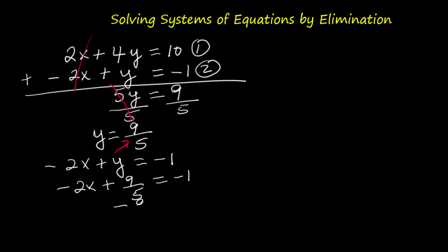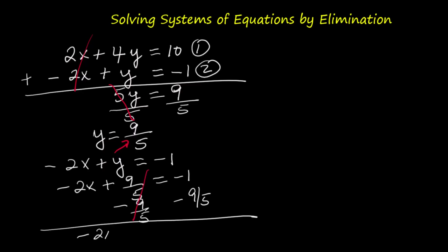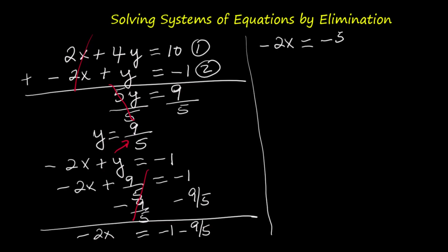Subtract 9 over 5 from both sides: negative 2x equals negative 1 minus 9 over 5. To subtract, we need a common denominator — 5 is the common denominator. Multiply negative 1 by 5 to get negative 5 over 5, so negative 2x equals negative 5 over 5 minus 9 over 5. That gives negative 2x equals negative 14 over 5.